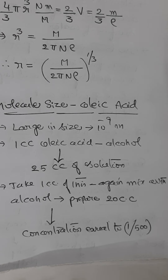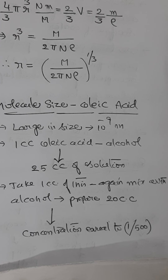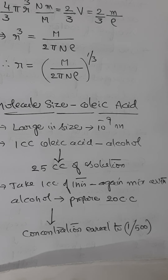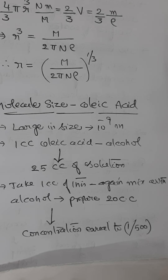To measure this size, we take 1 cc of oleic acid and mix it with alcohol to prepare 25 cc of the solution. Then take 1 cc of this solution and mix it again with alcohol to prepare 20 cc of solution. In this way, a solution of oleic acid in alcohol with concentration equal to 1 by 500 is prepared.